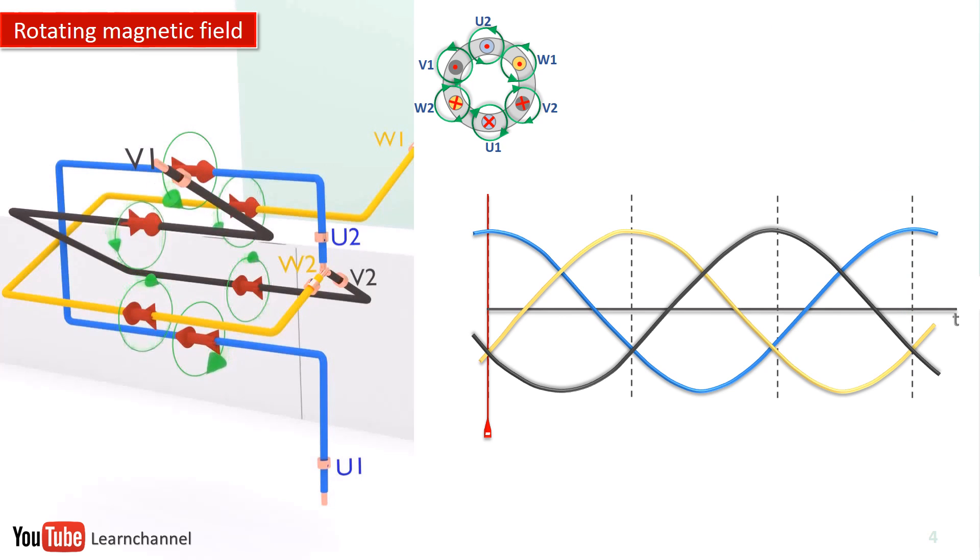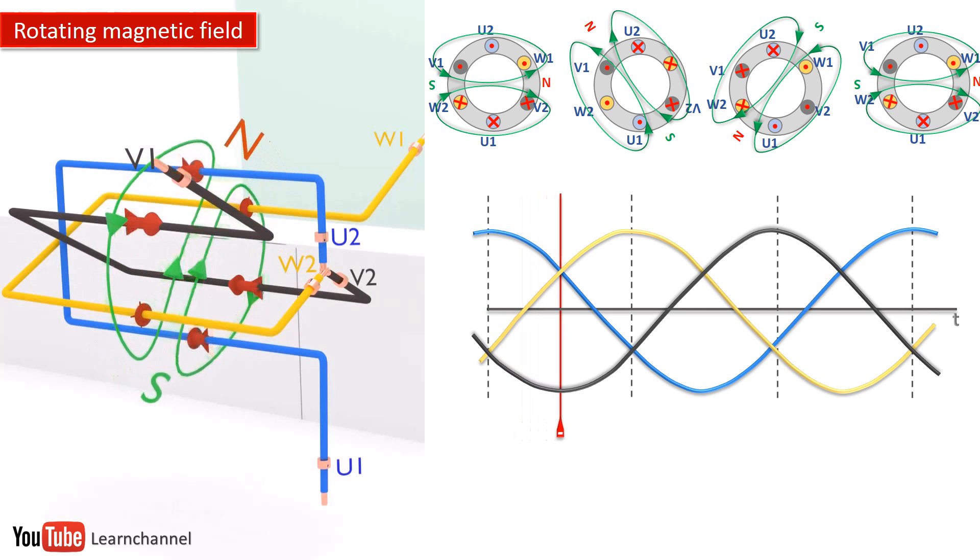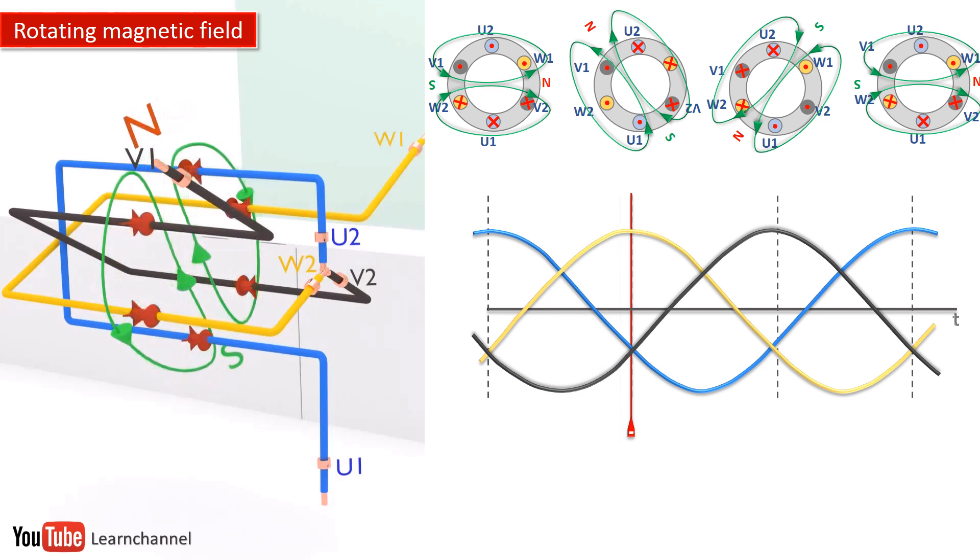To get to an RMF, you need three wires, which are rotated 120 degrees to each other and connected to three-phase current. Magnetic fields with the same direction can be combined as you see. This makes our illustration much simpler. Let's start and make some snapshots to see how the RMF rotates.